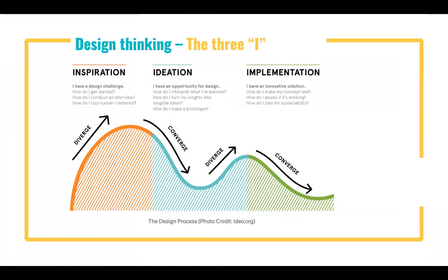There are three I's in Design Thinking. There's Inspiration — building empathy for individuals to communicate what they are designing for. There's Ideation — to inform the design of new solutions and improve understanding of the problem. And the third is Implementation — creating space to test ideas and prototypes of the solution before implementing them. You see a pattern of diverge, converge, diverge, converge. When looking for inspiration, you go for as wild ideas as possible — that's why you diverge. During ideation, you narrow it down — you converge. During implementation, you diverge again and finally come up with a final solution.